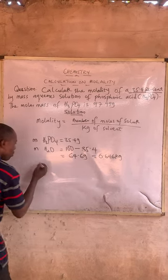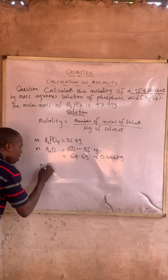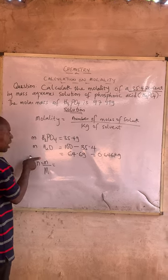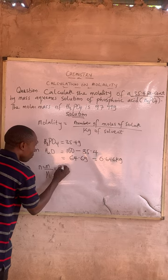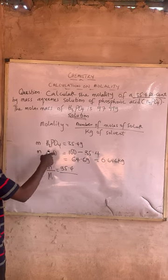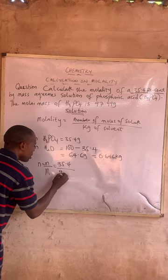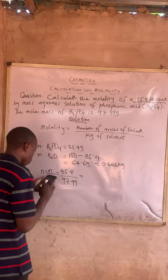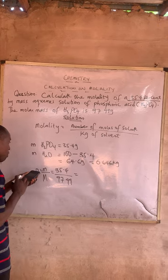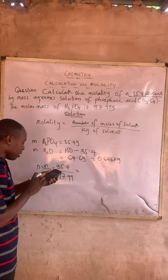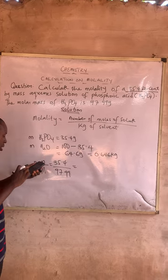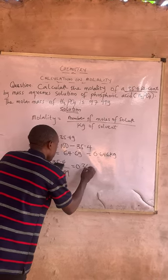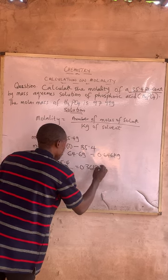Now to get the number of moles of the solute: number of moles equals mass over molar mass. The mass of the solute is 35.4 grams and the molar mass of the solute is 97.99. So, 35.4 divided by 97.99 gives 0.3613 moles.